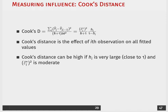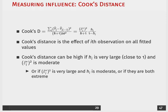Cook's distance can be high if one or two of these things is large. So it can be large if you have a large hat value, so it's very close to one, and if your studentized residual is moderate or large. Or if your studentized residual is very large and your hat value is moderate, then it's going to be large. Or if they're both extreme, it's going to be large.